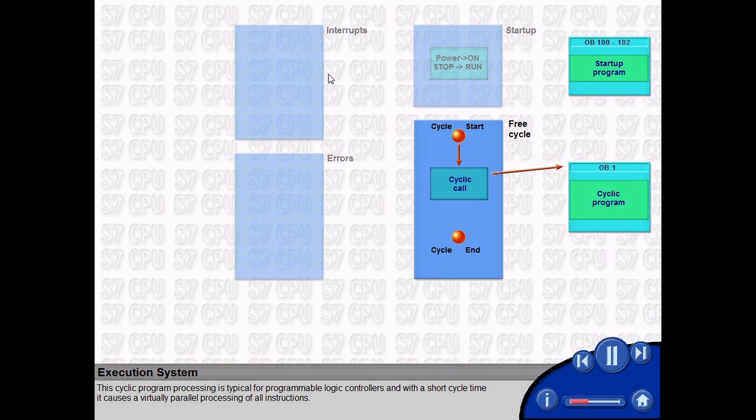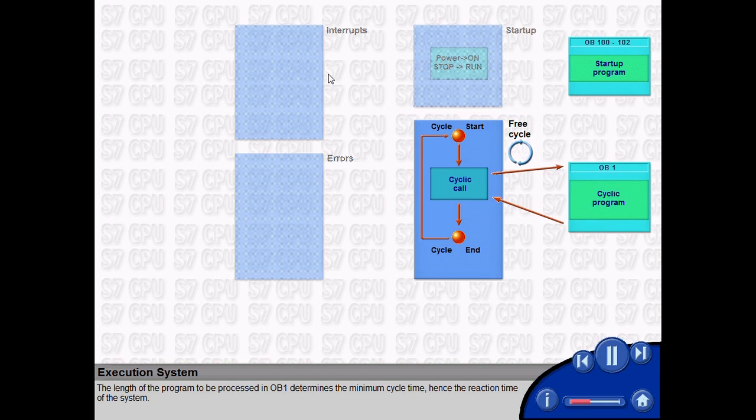This means the main program in OB1 is continuously and cyclically processed. This cyclic program processing is typical for programmable logic controllers. And with a short cycle time, it causes a virtually parallel processing of all instructions. The length of the program to be processed in OB1 determines the minimum cycle time, hence the reaction time of the system.